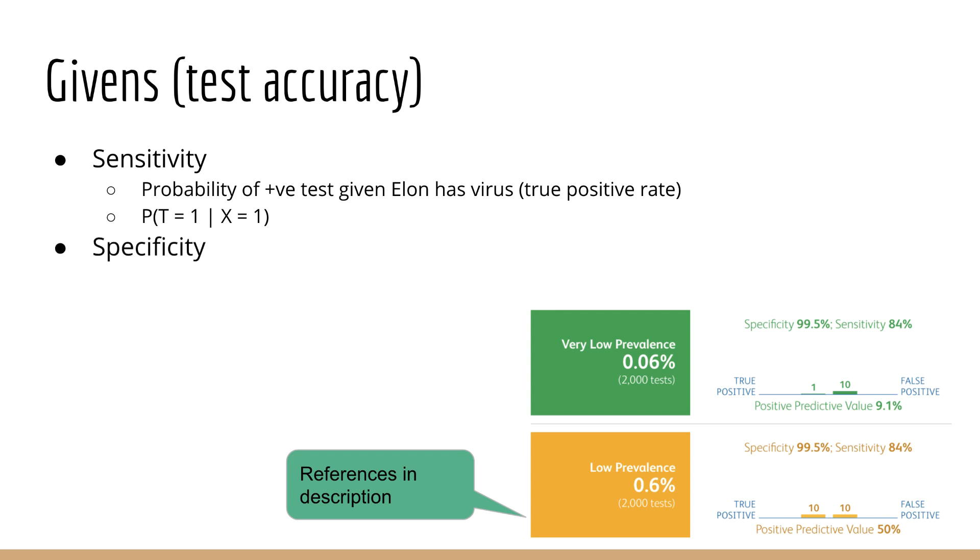The specificity is the probability that the test comes back negative, given that the patient does not have the virus. We call this the true negative rate. Using our notation, this is p of t equals 0, given x equals 0. As a side note, if you want references to this data, please check the links in the description below.